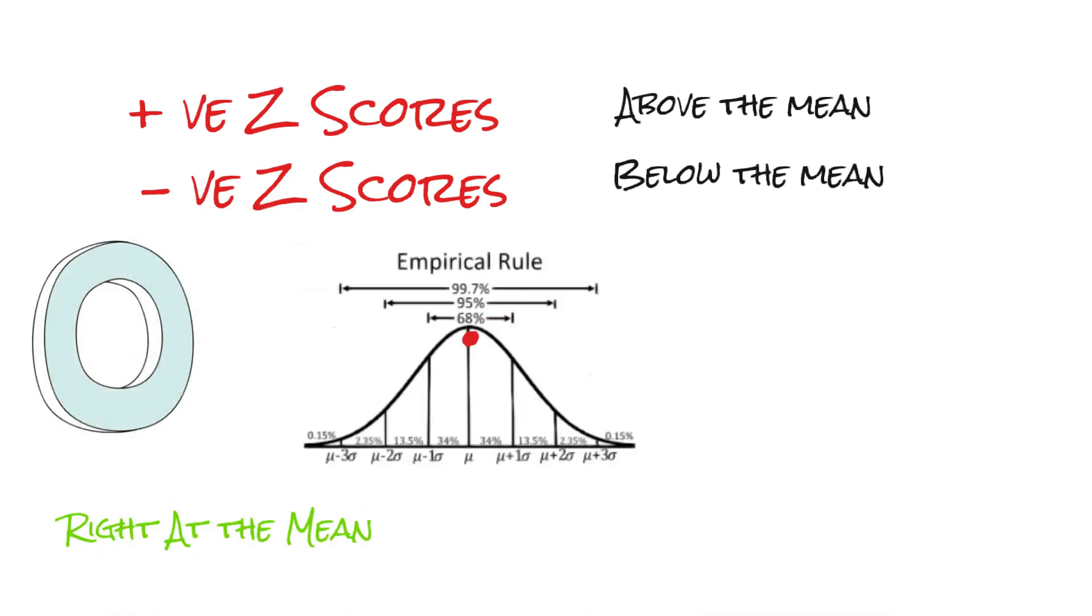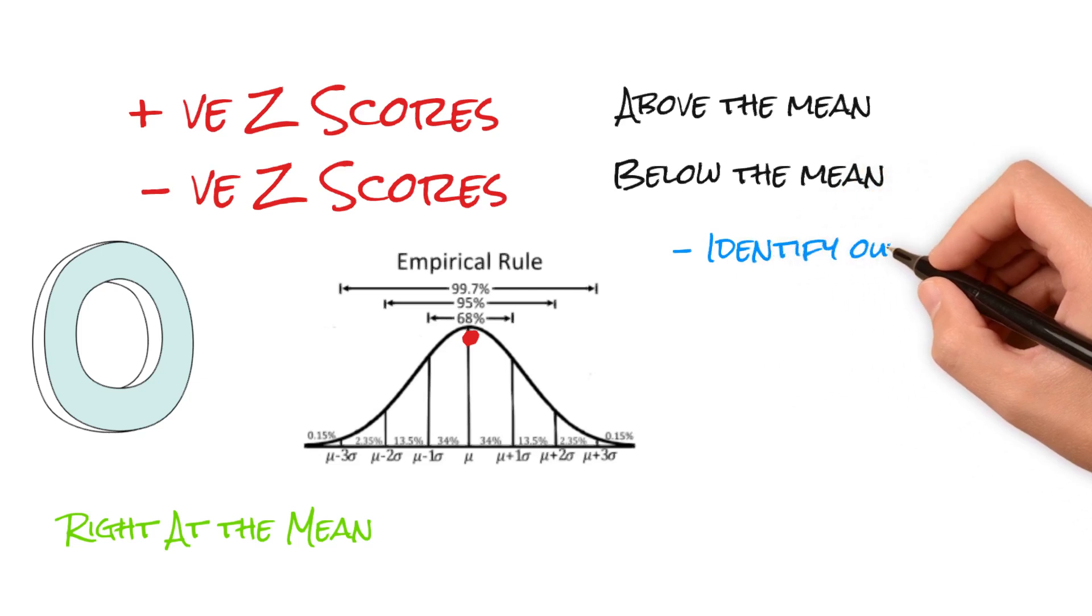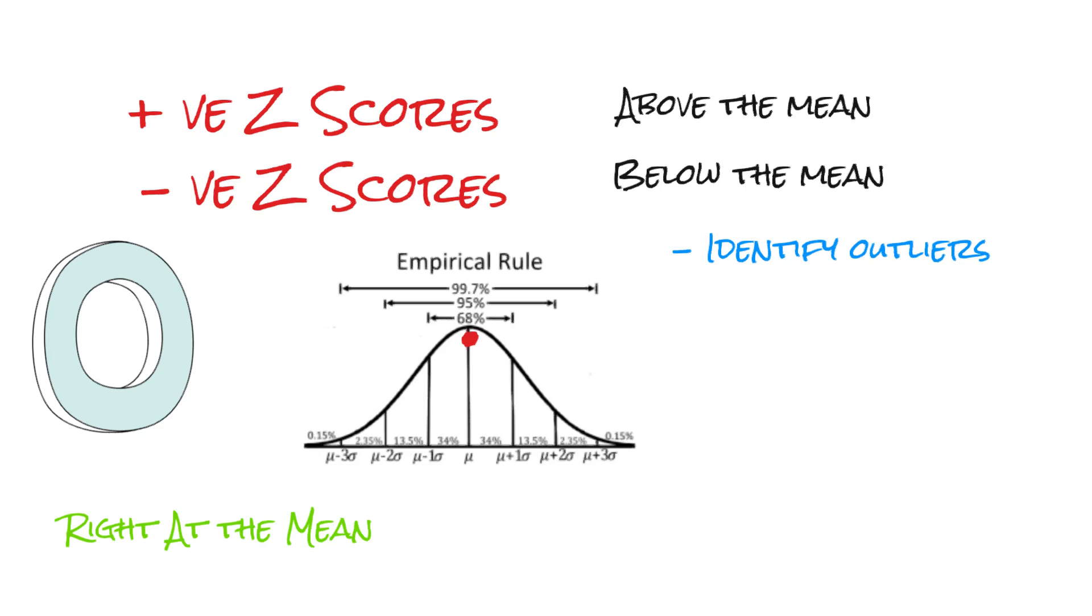But why do we care about Z-scores? Well, they serve multiple purposes in the world of data analysis. For instance, they help us identify outliers, those values that stand significantly apart from the mean. Z-scores also come in handy during data preprocessing, allowing us to standardize data when working with variables on different scales.